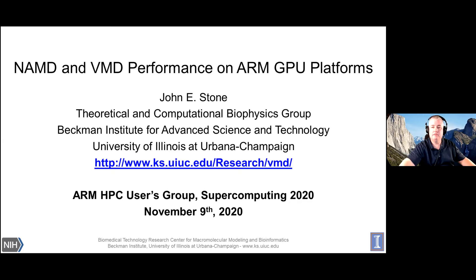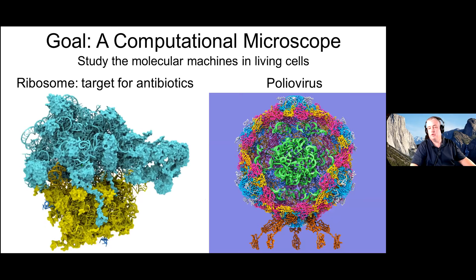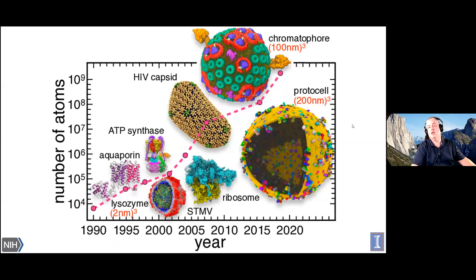The goal of our software tools is to enable scientists to simulate large biological systems to understand their structure and function. With things like COVID being studied in great detail, these are very large structures and very challenging systems, and we need to be able to run simulations of virus structures and their various components on large HPC systems. Our software has been used for multiple decades, and ongoing improvements in cryo-electron microscopy imaging techniques have allowed us to study ever-larger systems over time.